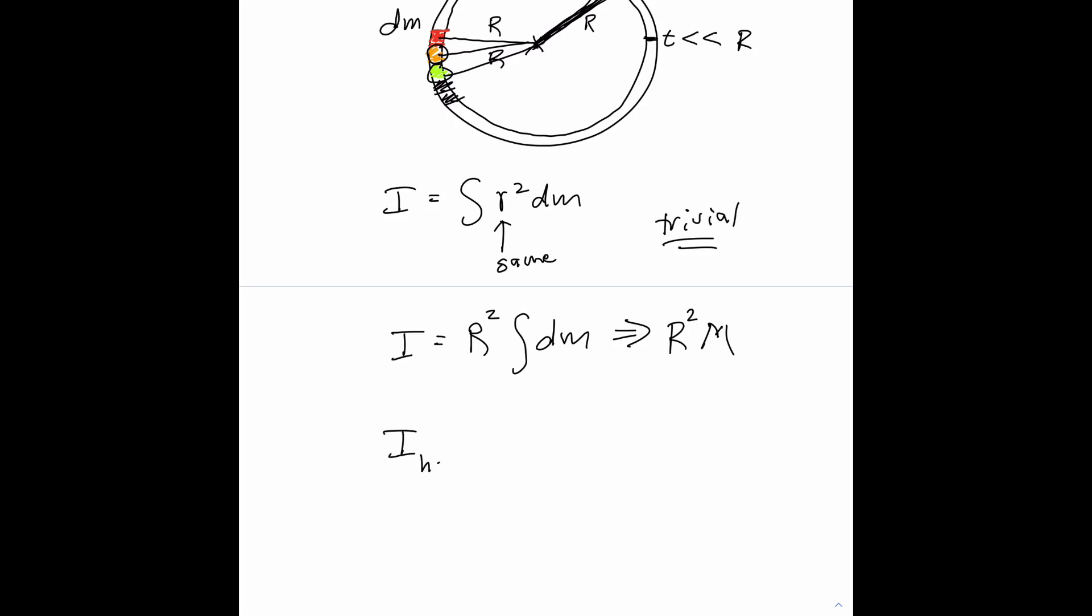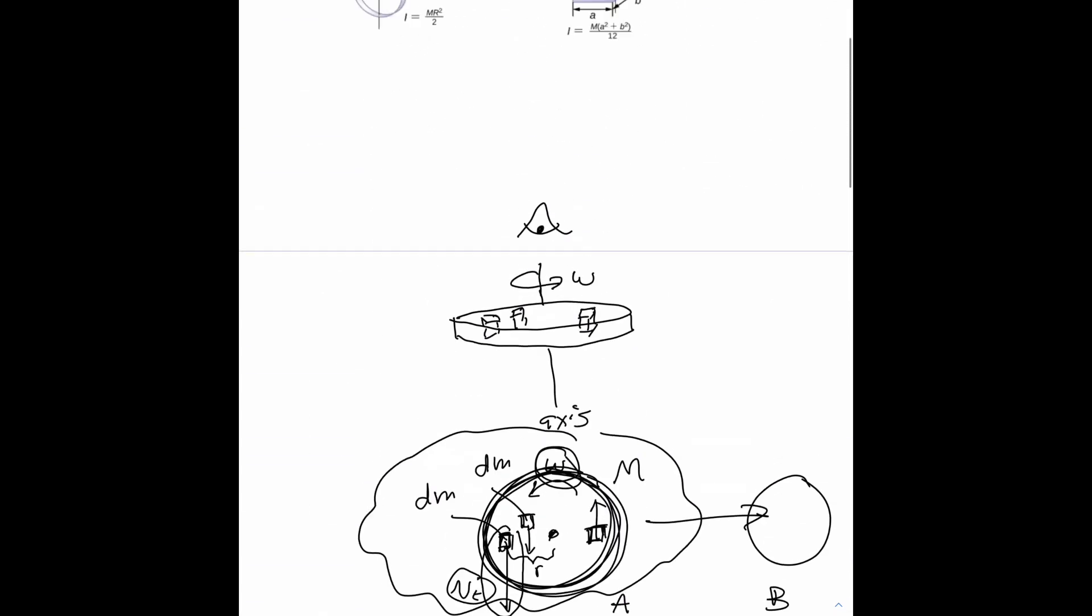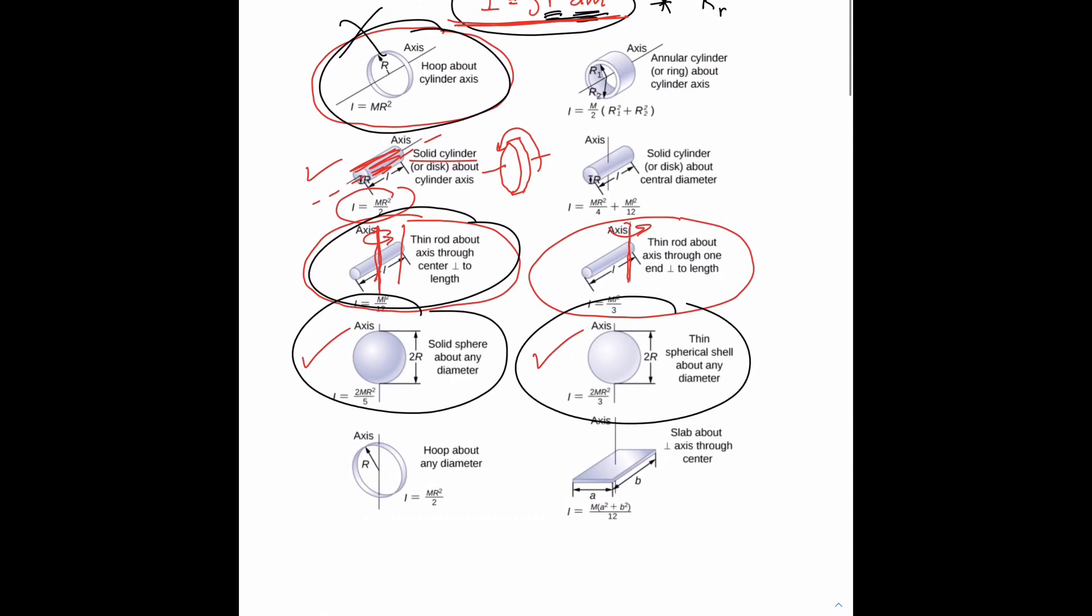So i for a hoop about the central axis perpendicular to the plane, we'll just call it i hoop for now, is equal to m r squared. So let's scroll back up and look at our list of formulas. That's exactly what's stated here. i equals m r squared.